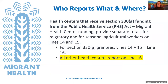To answer who reports what and where, it's important to refer to the 2022 UDS manual — a link is in the chat. This manual states that health centers receiving Section 330 funding must provide separate totals for both migratory and seasonal agricultural workers on lines 14 and 15 of the UDS report. Line 16 covers other health centers; those that do not receive the 330 funding report their total migratory and seasonal agricultural workers on line 16. It's important to note that all health centers report these populations regardless of whether they directly receive special population funding.